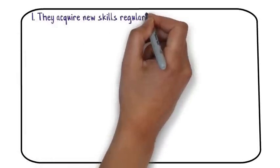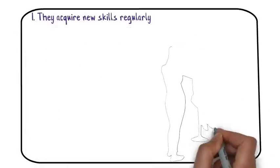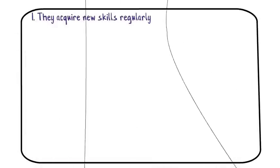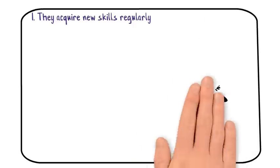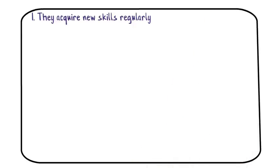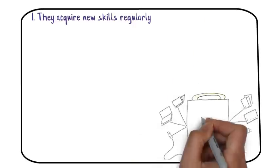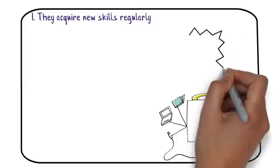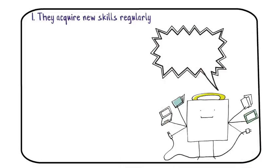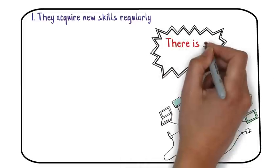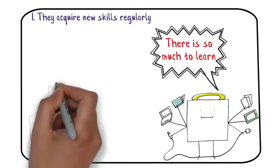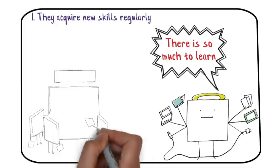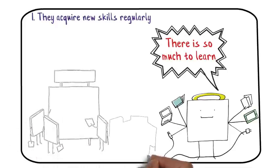Number one: they acquire new skills. Acquiring new skills regularly is one of the best things that quick learners do throughout their lifetime, and they do that by regularly examining their knowledge gaps. They're always curious about the world and always aware of how much they still have to learn. Most people complete their formal education and stop studying new subjects after that, while formal education is important for starting a career.